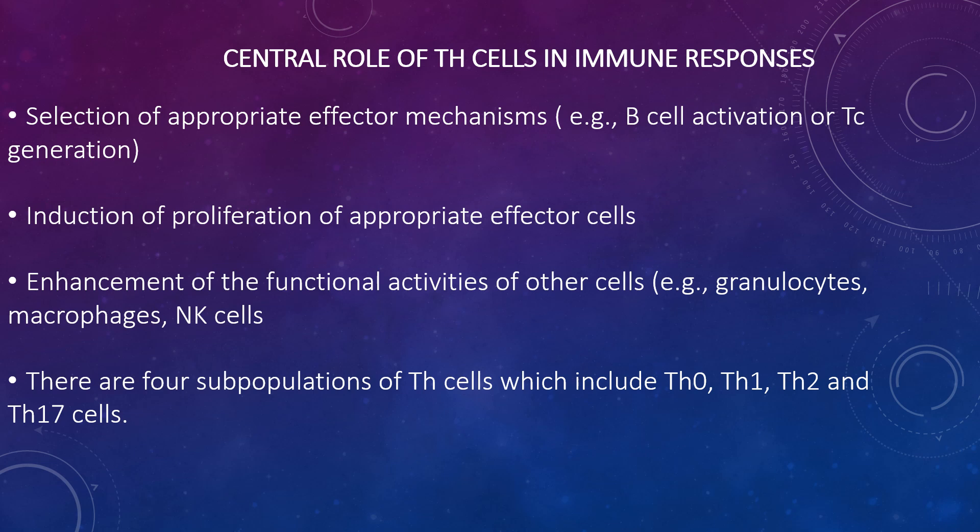The central role of T-helper cells in immune responses: after T-helper cells recognise specific antigens presented by an antigen-presenting cell, they can initiate several key immune responses. These include selection of appropriate effector mechanisms such as B-cell activation or T-cell generation, induction of proliferation of appropriate effector cells, and enhancement of the functional activities of other cells such as granulocytes, macrophages, and natural killer cells.